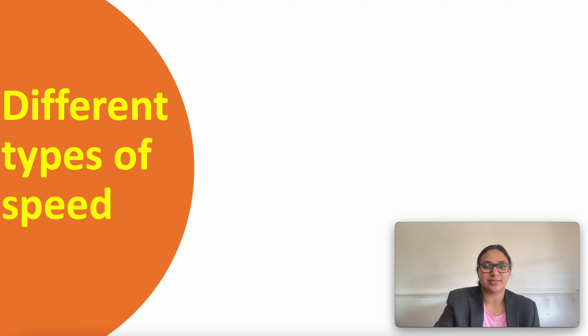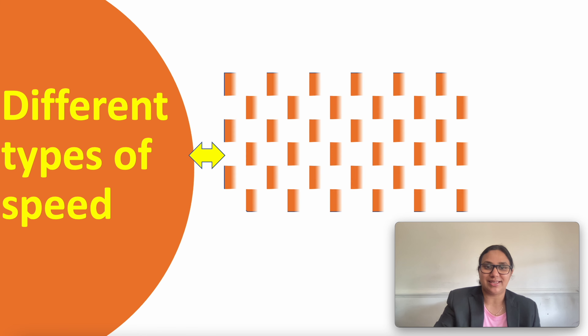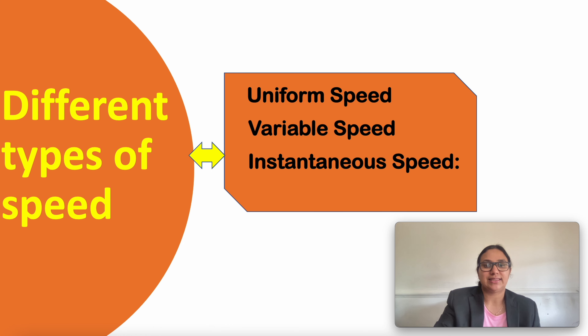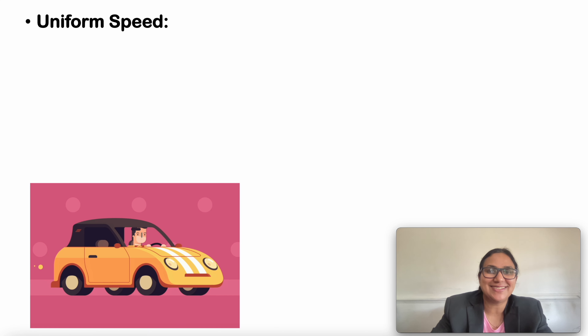Basically there are 4 different types of speed in physics and each one will be explained in detail. The first one is uniform speed, second one is variable speed, third one is instantaneous speed, and last is average speed. Let us start with uniform speed.